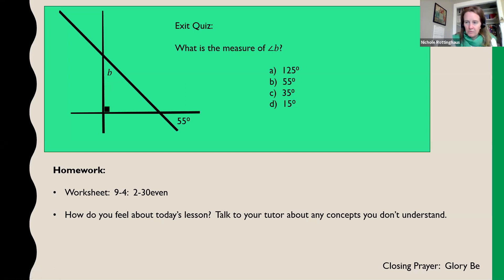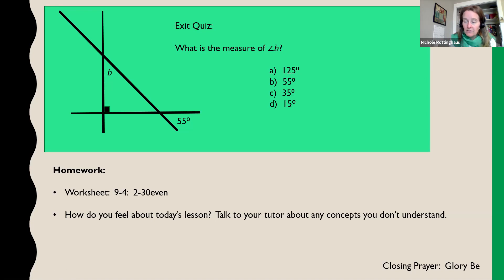Let's talk about your homework assignment. It is worksheet 9-4, problems two through thirty even. A lot of the worksheet involves looking at angles and describing which ones are congruent to other angles — use those rules for parallel lines and transversals to figure out which angles are congruent. The second part is very similar to what I just solved: parallel lines, a couple of transversals, and you solve for missing angles using the rules of congruency. There's no algebra in any of these problems — it's just adding and subtracting numbers. I want you to feel confident on that before we move on to algebra applications next week.